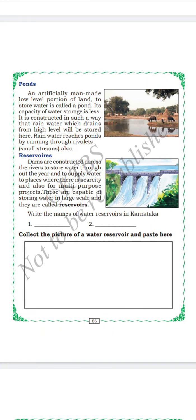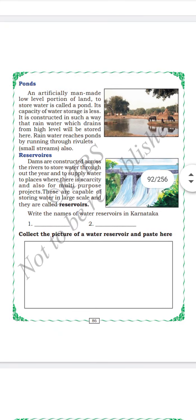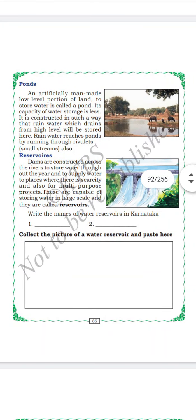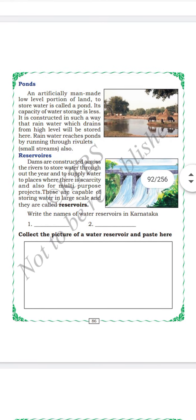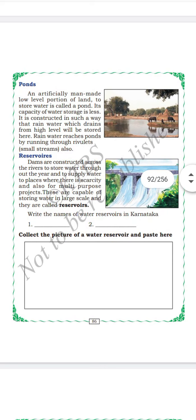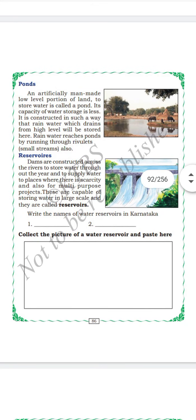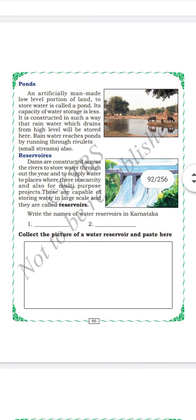In Karnataka there is KRS dam, Tungabhadra dam, and Krishna water dam. Many dams are constructed across rivers to stop the flowing water and store it. These dams are capable of storing large amounts of water, unlike a pond. Ponds collect only a little rain water, but dams collect a lot of water and have great depth also.